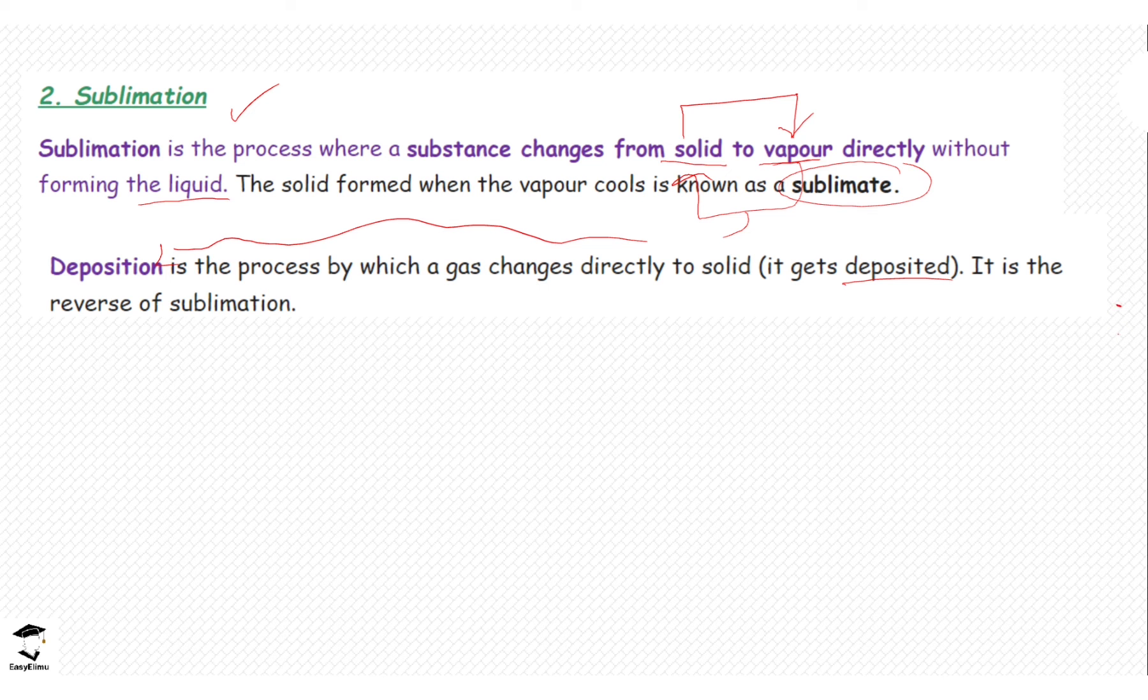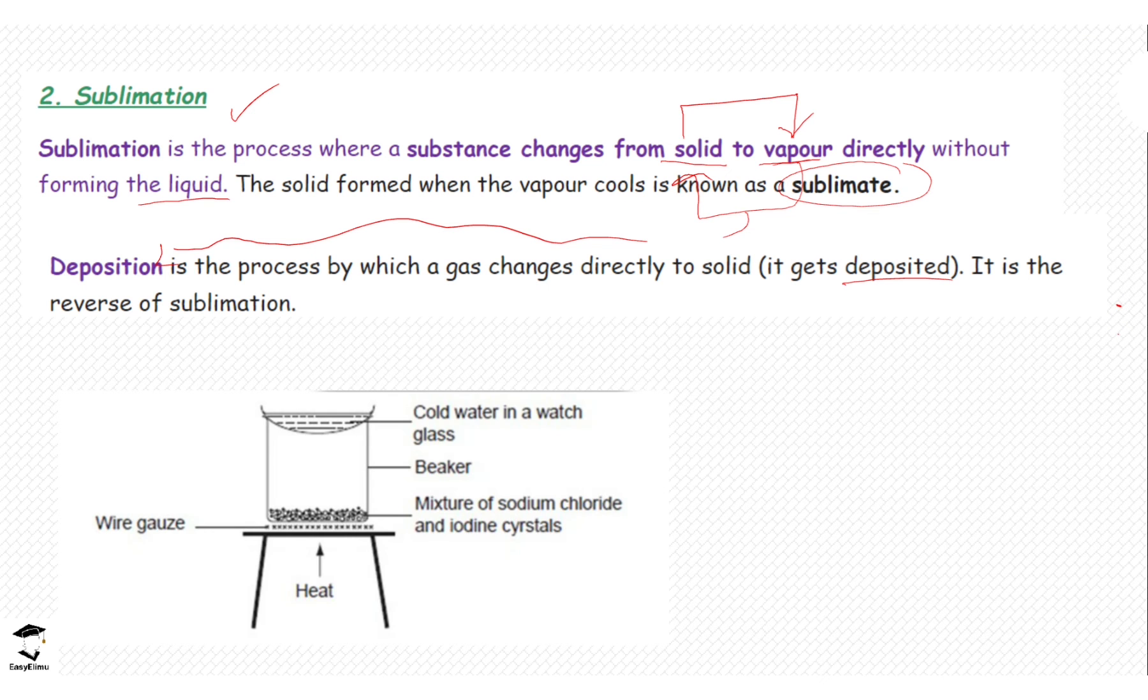An example of a mixture is the mixture of iodine, which is a common compound that sublimes, and sodium chloride, which is the table salt. So if you mix these two together, this is the experiment we are going to use for this reaction. I want you to notice the apparatus that are being used for the experiment.